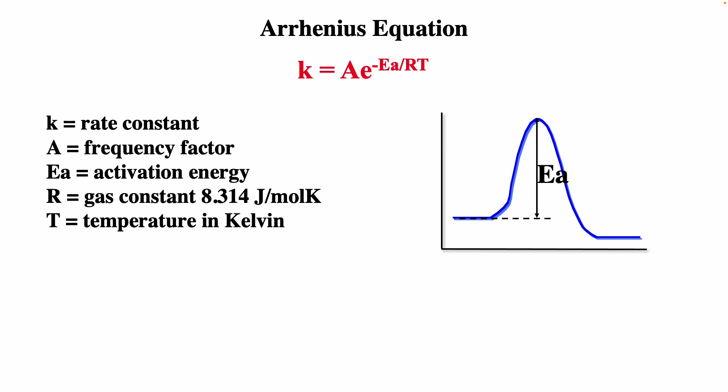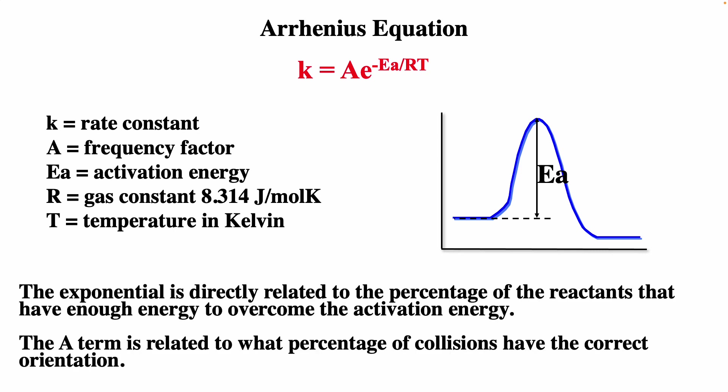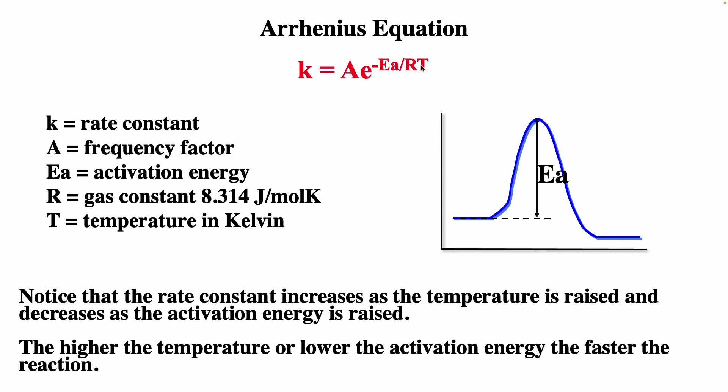The Arrhenius equation is used to calculate the rate constant. Lowercase k, the rate constant, equals A (a frequency factor) times e to the minus Ea over RT, where Ea is activation energy, R is the gas constant, and T is temperature in Kelvin. The exponent is directly related to the percent of reactants that have enough energy to overcome the activation energy. The A term relates to what percent of collisions have the correct orientation. Notice that the rate constant increases as temperature is raised and decreases as the activation energy is raised — the higher the temperature or lower the activation energy, the faster the reaction.